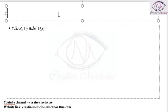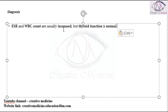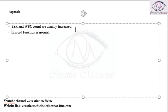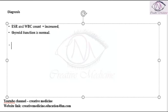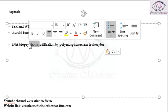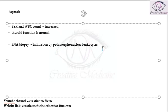How do you diagnose acute suppurative thyroiditis? One important finding is that the ESR and WBC are raised, but the thyroid function tests are normal. We need to perform FNAC for diagnosis. The FNAC biopsy shows infiltration of polymorphonuclear leukocytes in the thyroid tissue, and if these PMN leukocytes are seen, you can diagnose the patient.